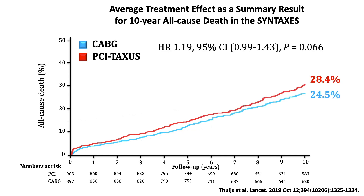You see here the average treatment effect as a summary result for 10-year all-cause death in the SYNTAX trial. All-cause death with CABG was 24.5% and with PCI was 28.4%, a hazard ratio of 1.19, representing an increased risk of 19%, with a 95% confidence interval between 0.99 and 1.43, and a p-value of 0.066.